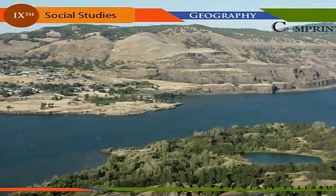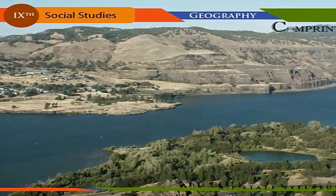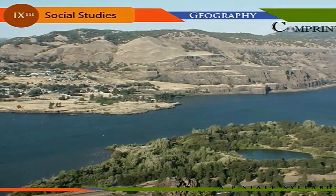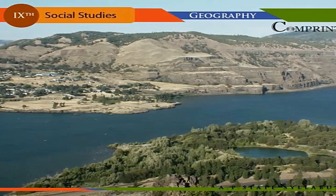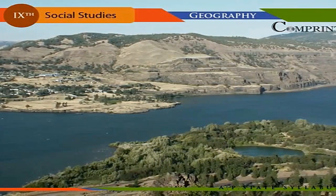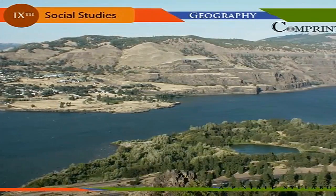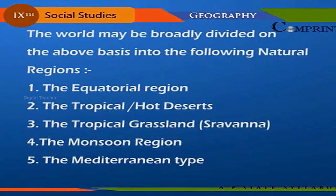A natural region may be defined as an area on the Earth's surface where a similarity may be observed in respect of climate, landforms, and natural vegetation, which in turn brings out a similarity in the mode of living of man. The world may be broadly divided on the above basis into the following natural regions.